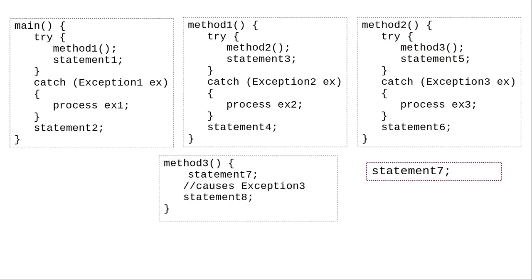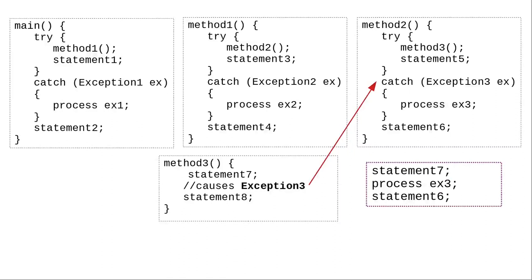What happens if method 3 does statement 7 and then causes an exception of type exception 3? Method 3 immediately terminates. Statement 8 will never happen. Method 3 doesn't have a try-catch, so the exception gets thrown to its caller, method 2. Method 2 can catch exception 3, and it will process that exception and continue to statement 6.